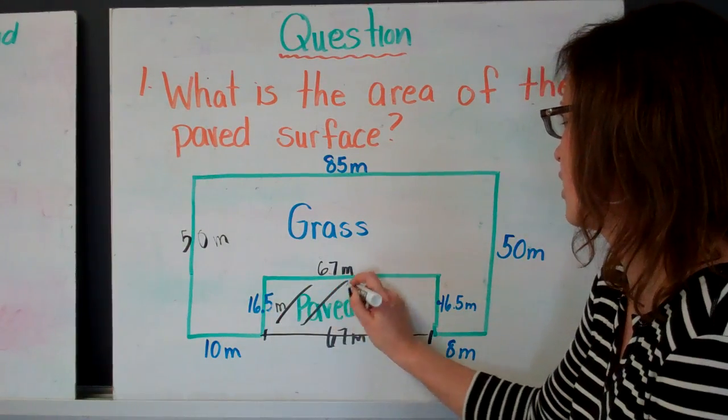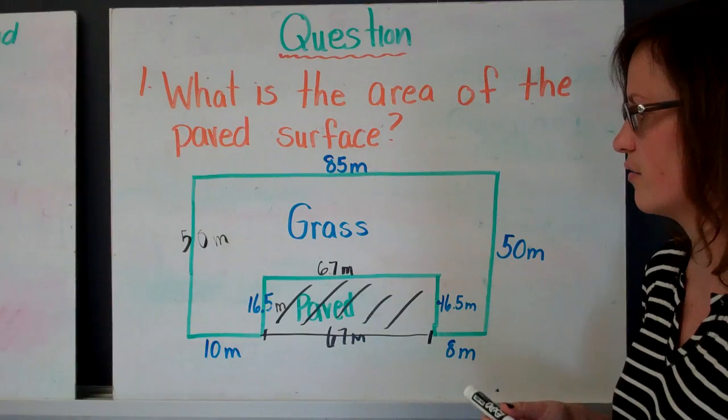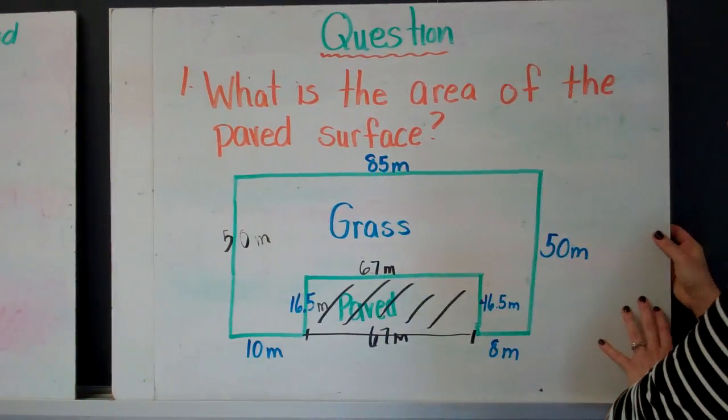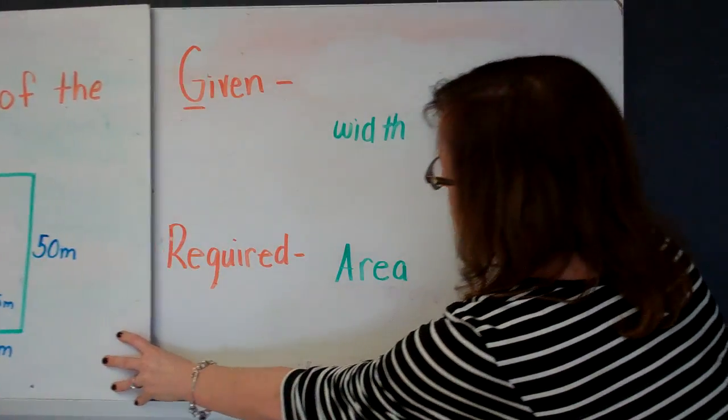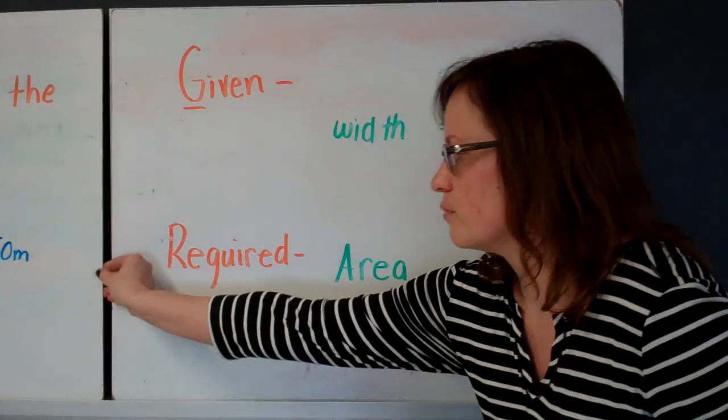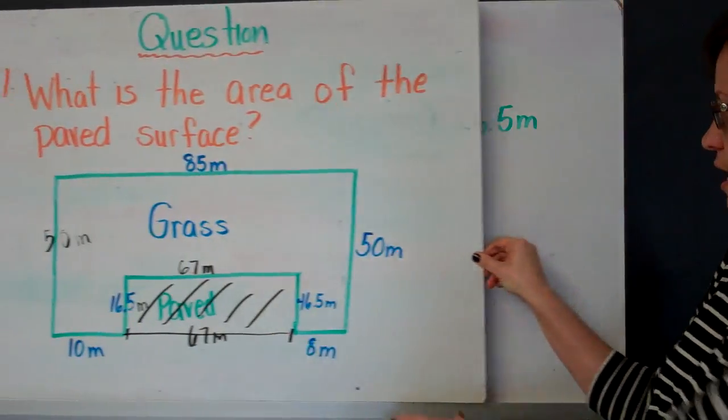And this is the area that I'm trying to find. That's the required information. Okay, so let's go through the GRASS method. G is the given information. So we're looking for the paved area.